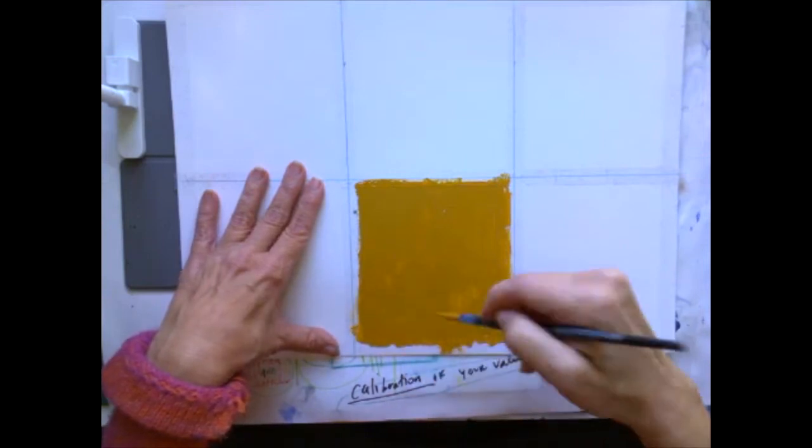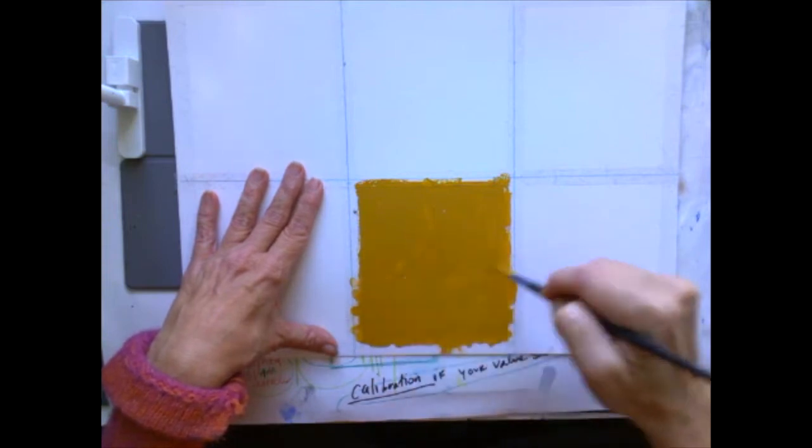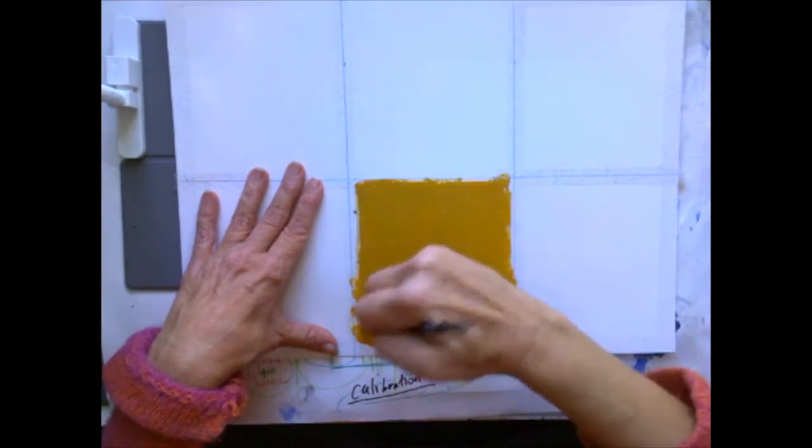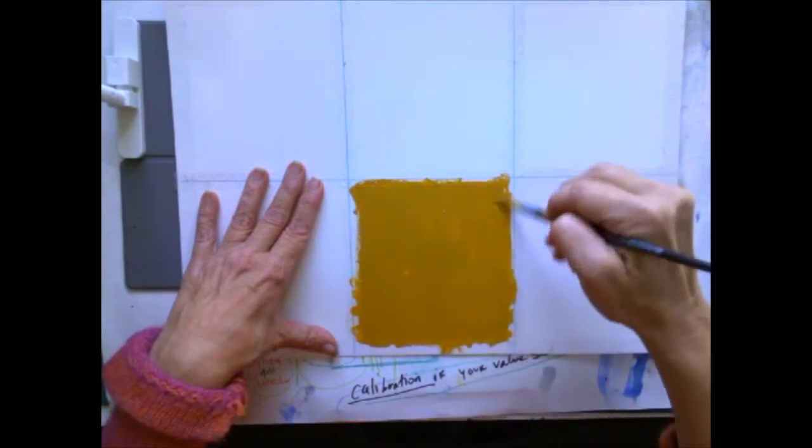But I would call this color closer to yellow ochre, even though it's called yellow earth. This is what I would call that. So if you notice the naming conventions for every paint is a little different.